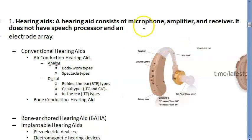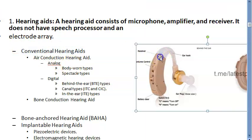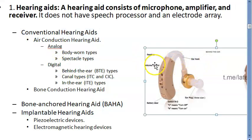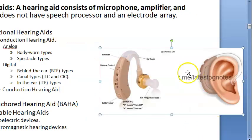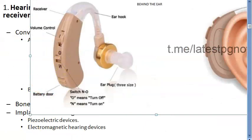A hearing aid consists of a microphone, an amplifier, and a receiver. The microphone listens, then the sound is amplified, and there is a receiver. It does not have a speech processor or electrode. Under conventional hearing aids you have air conduction hearing aids, which are the main type — analog or digital — such as the behind-the-ear type you can see here.